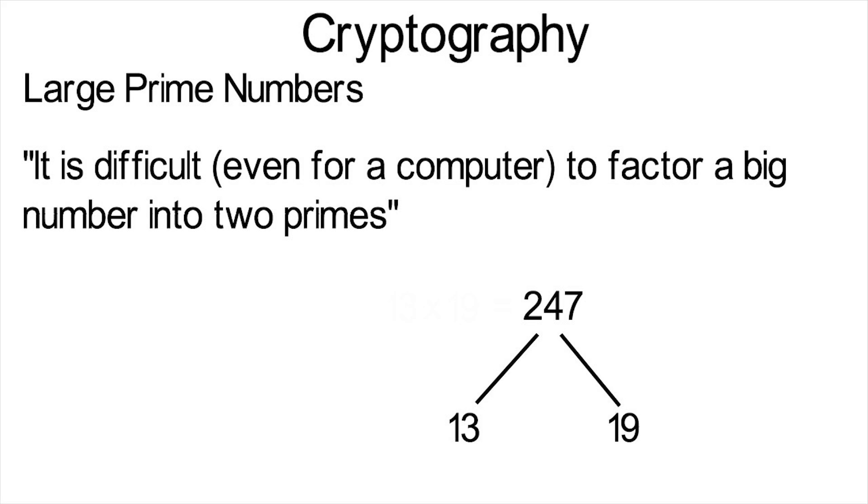The fastest algorithm we know of is called the general number field sieve, but when you get to several hundred digits, this algorithm becomes unfeasible.